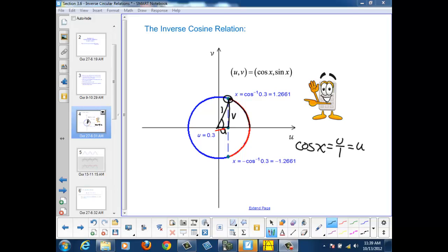Now, if I ask the question, when is that cosine of the angle equal to 0.3, that's the same as asking, when is my u coordinate equal to 0.3 on my unit circle?